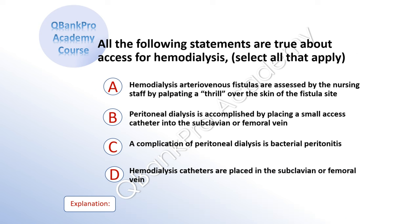All of the following statements are true about access for hemodialysis. Select all that apply. A: hemodialysis arterial venous fistulas are assessed by the nursing staff palpating a thrill over the skin of the fistula site. B: peritoneal dialysis is accomplished by placing a small access catheter into the subclavian or femoral vein. C: a complication of peritoneal dialysis is bacterial peritonitis. D: hemodialysis catheters are placed in the subclavian or femoral vein.